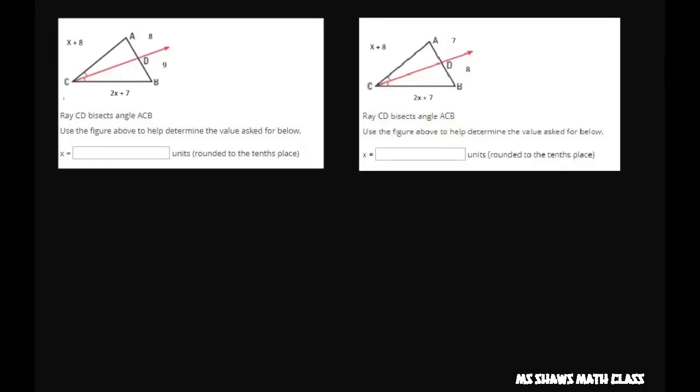Hi everyone, ray CD bisects this whole triangle, so that means these two sides are proportional and we need to solve for x. So look at this first little triangle and we already know that this side equals itself. If you pull these triangles apart, you want to say 8 is to 2x plus 8 as 9 is to 2x plus 7.